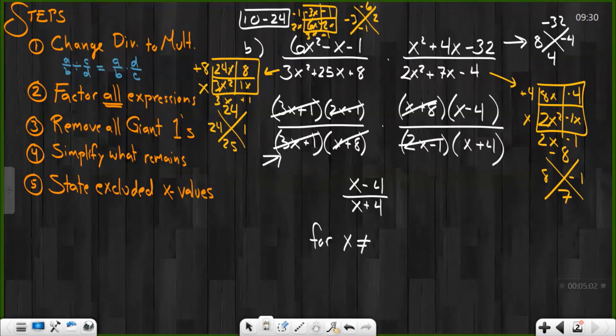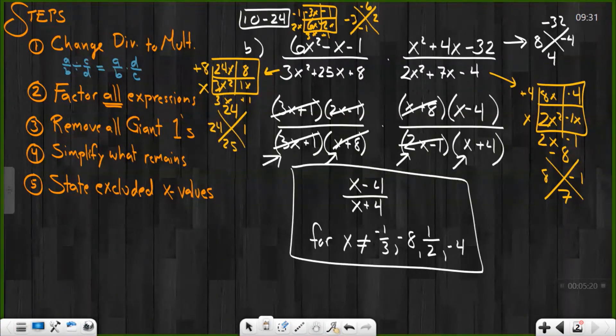And don't forget to state our excluded values of x. We're looking everywhere x has been in the denominator. Here, the opposite of 3x plus 1 would be negative 1 divided by 3. The opposite of plus 8 would be negative 8. The opposite of 2x minus 1 would be positive 1 divided by 2. And the opposite of plus 4 would be minus 4. Those are my excluded values of x in order to simplify this rational expression.